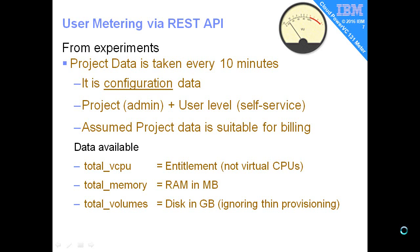The data that is available is total vCPU — and I immediately thought virtual CPU, but they actually mean the entitled capacity. The total memory is the RAM actually in all the virtual machines added up, in megabytes. The total volumes is the disks, in gigabytes. I'll ignore any thin provisioning — it's not aware of that.